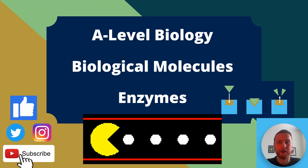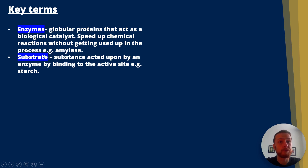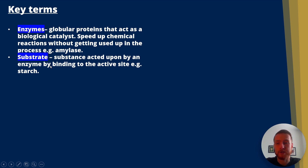Let's have a look at AQA A-level biology enzymes. Some key terms first of all: enzymes are globular proteins that act as a biological catalyst. They speed up chemical reactions without getting used up in the process — a key example is amylase. Substrates are substances acted upon by an enzyme by binding to the active site. An example of a substrate could be starch, which binds to the active site of amylase.